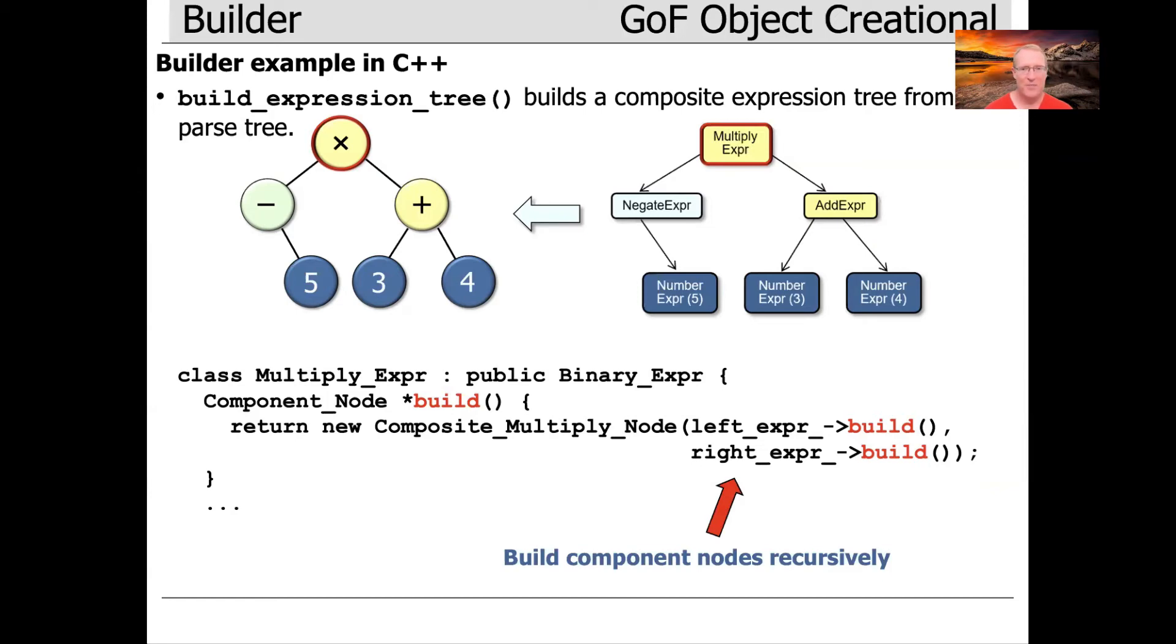the composite negate node in the composite expression tree, and composite multiply node in the composite expression tree, that'll get passed back as the result of build here.